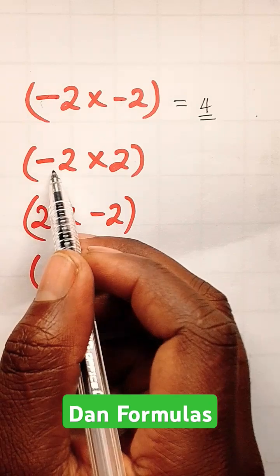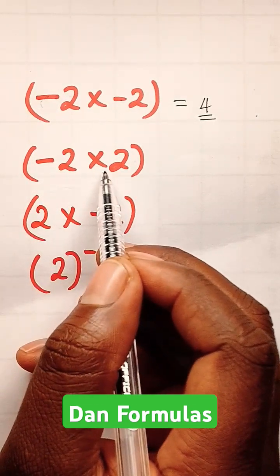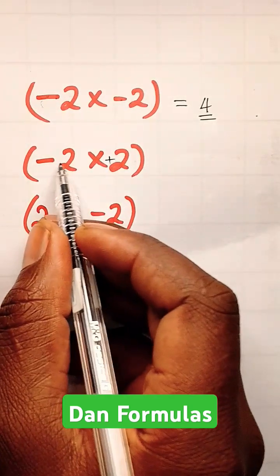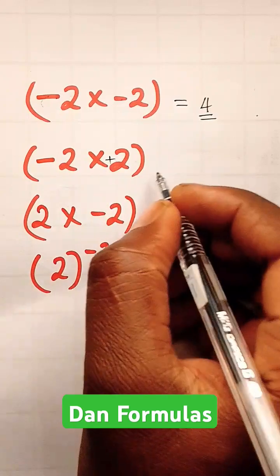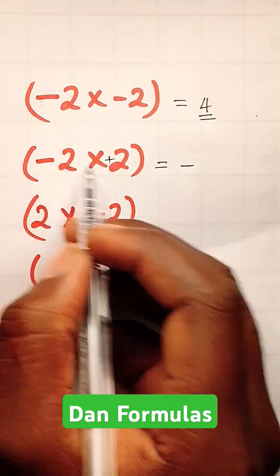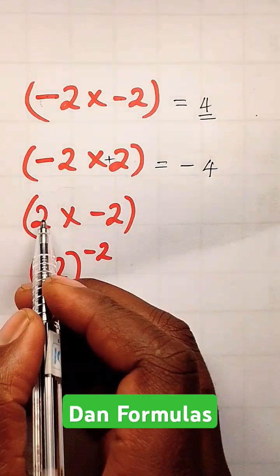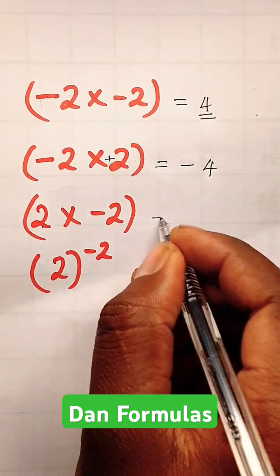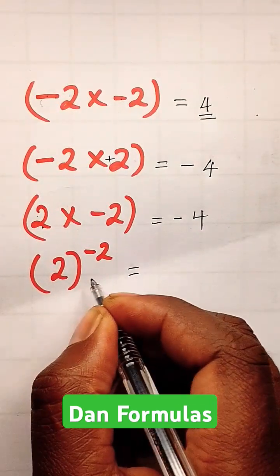Look at the second question here. We are given negative 2 times positive 2. When we multiply negative and positive, the answer will be negative. So 2 times 2 gives us negative 4. This is positive times negative, which is negative 4.